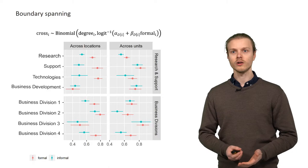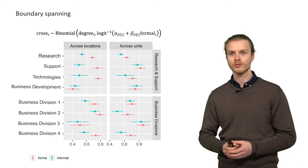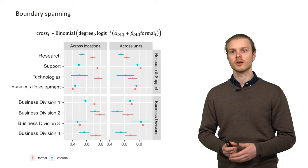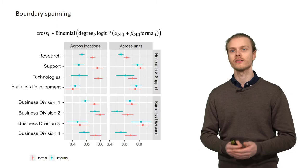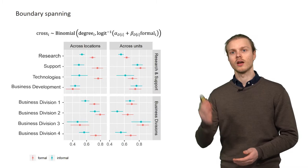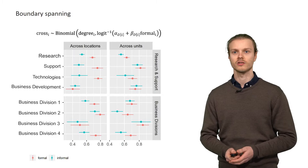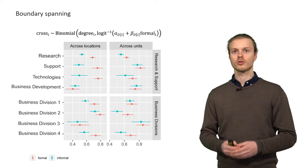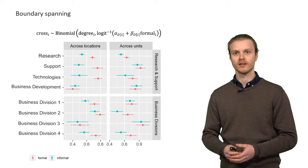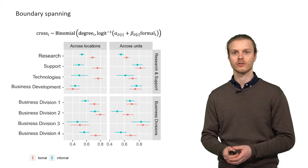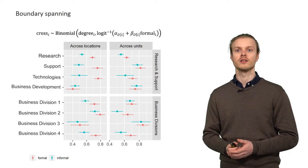We also investigate this disproportionate tendency of formal scouts to bridge geographical boundaries with a statistical model, which on the one hand confirms the general tendency, but on the other hand also shows that this tendency is expressed to different degrees across the various divisions of the organization and appears especially in some of the research and support divisions such as research or digitalization. We also applied the same kind of analysis to cross-organizational or cross-unit boundary spanning ties and find that here the difference between formal and informal scouts is much less pronounced.